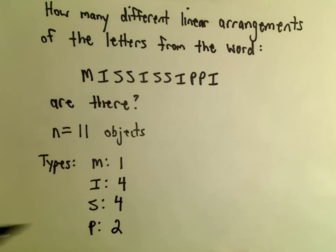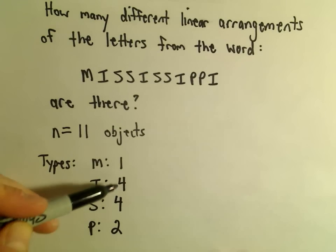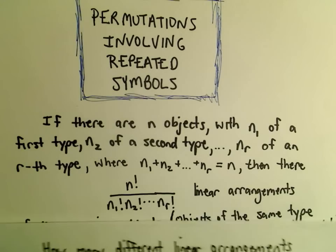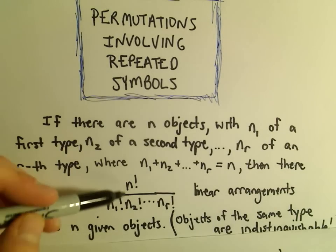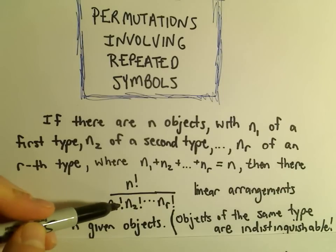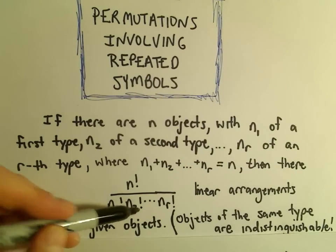Then it looks like 2 P's. If you add these together, 2 plus 4 plus 4 plus 1 equals 11, the total number of objects. That's all this condition says.